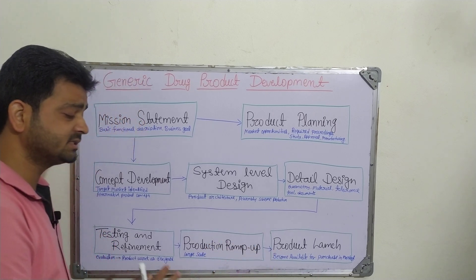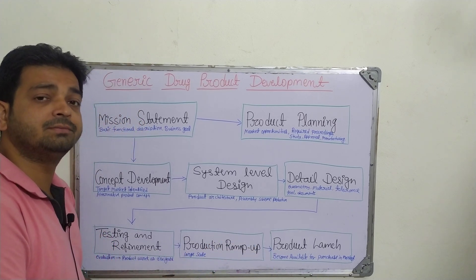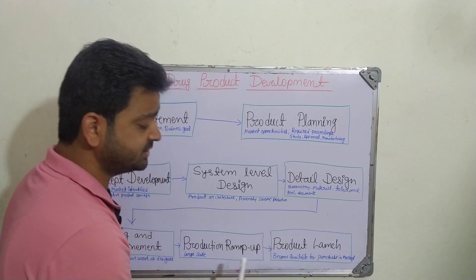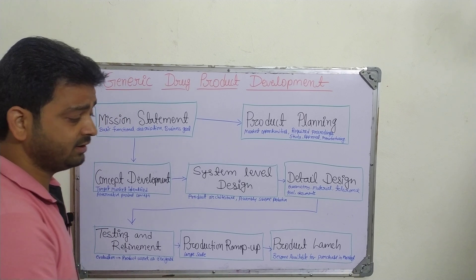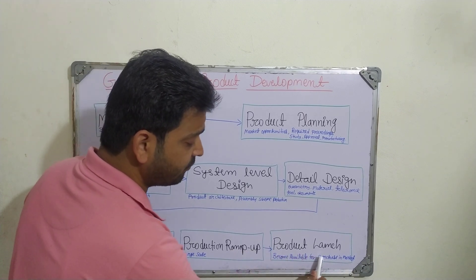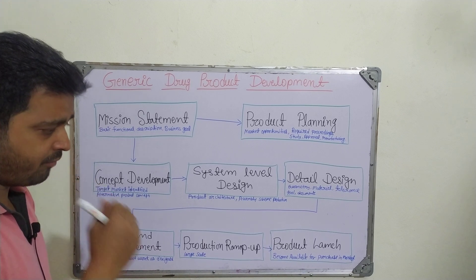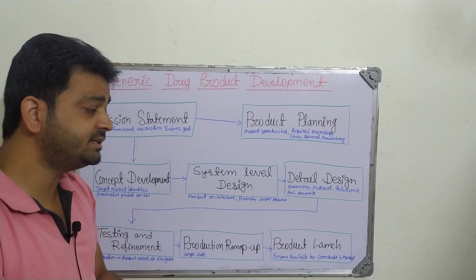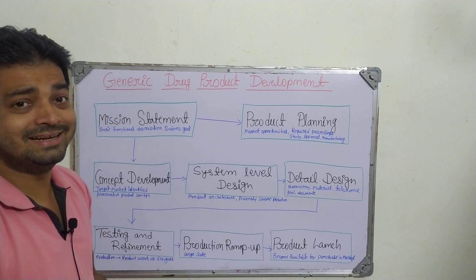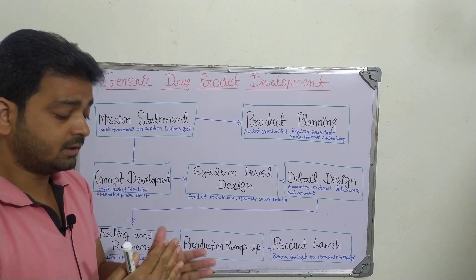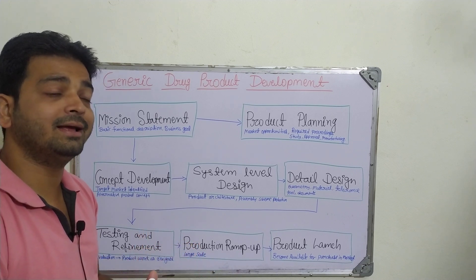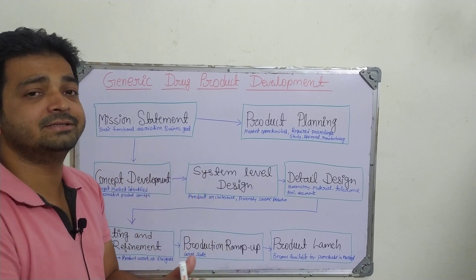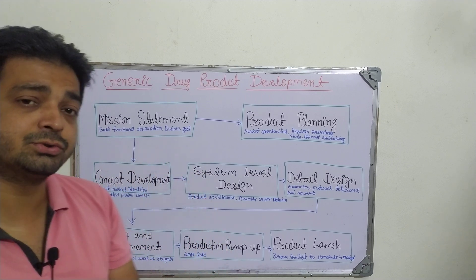Then we will go for production ramp up — once approved, large scale production will be done by the particular generic drug manufacturing company. Then product launch is the last step, where it comes into the market and becomes available for purchase. People who cannot afford the branded drug can now purchase the generic drug because it is less costly and has the same therapeutic activity as the branded drug.